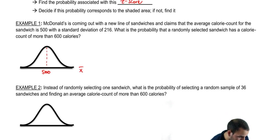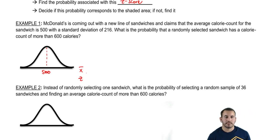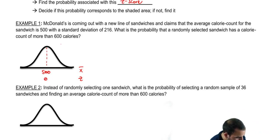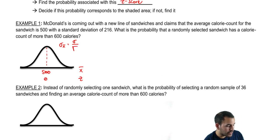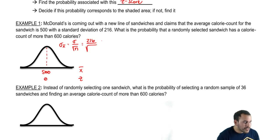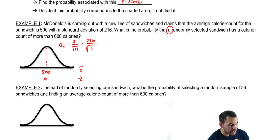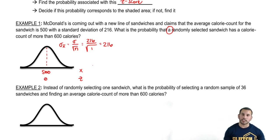So these are a bunch of sample means and these are z-scores associated with those sample means. What would 500 get in terms of z? Zero, because it's the midpoint — it's not above or below any standard errors. Now we have a standard deviation, but we're working with means, so let's convert that. Standard error is the standard deviation divided by the square root of n. So 216 divided by the square root of n — but what's our sample size? It's actually 1, because they said a randomly selected sandwich. So we're dealing with individual observations, not sample means.